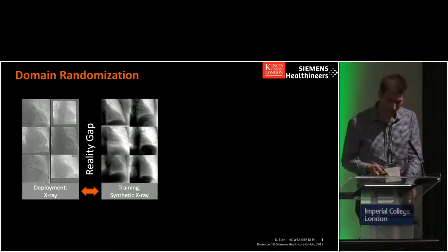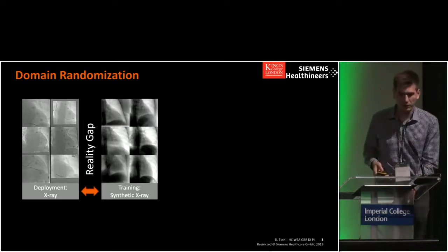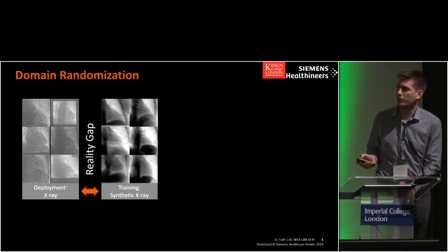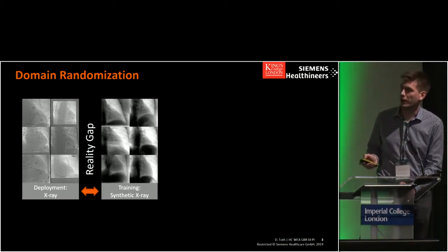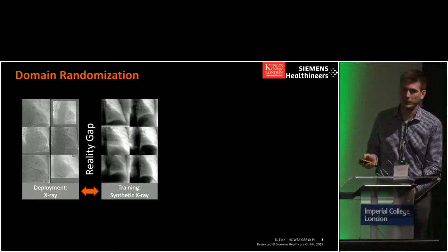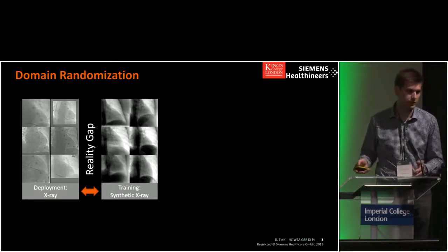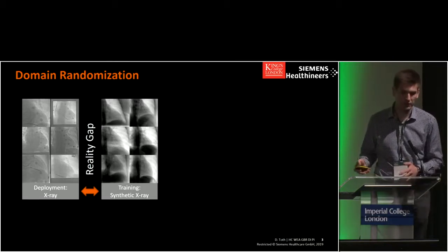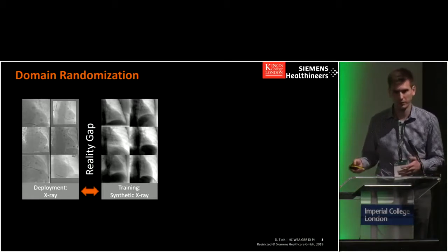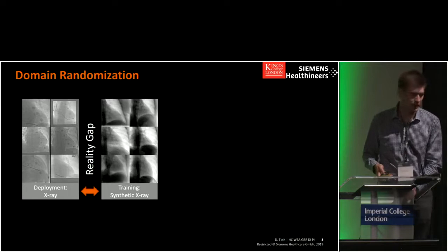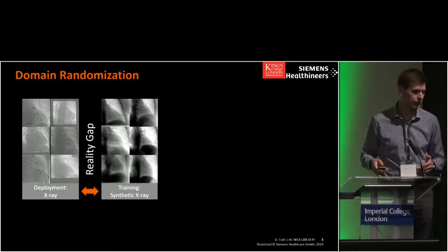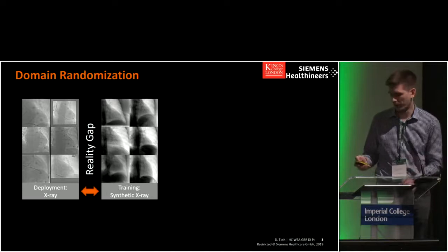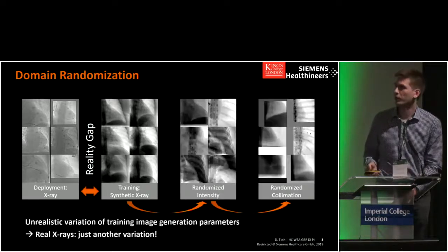However, there is a problem here. It seems to be working in most cases, but if you look at the images, our x-rays that we apply our algorithm on look quite different compared to the training data we use. We've trained fully on synthetic images, and those are real x-rays. So in the results there will obviously be some difference if you train fully on real data or fully on synthetic — this is what we call the reality gap. The natural way would be to try to simulate more realistic images, however we chose a different approach: domain randomization.